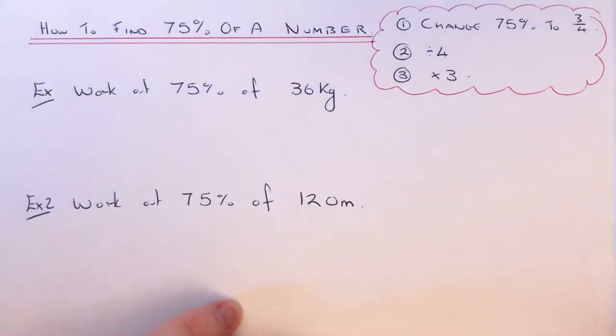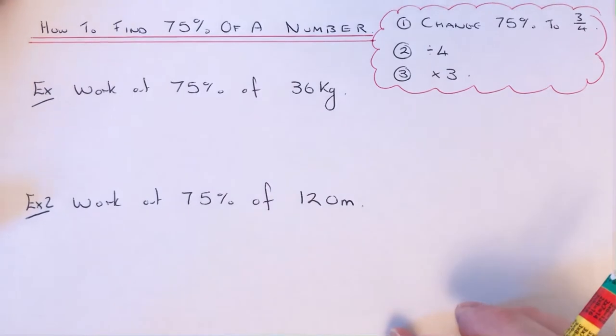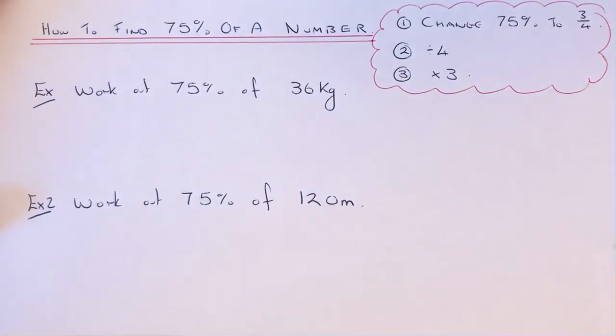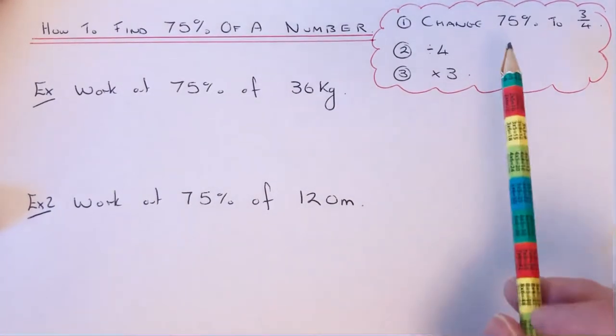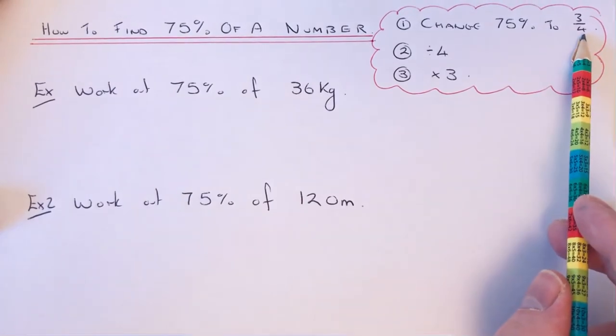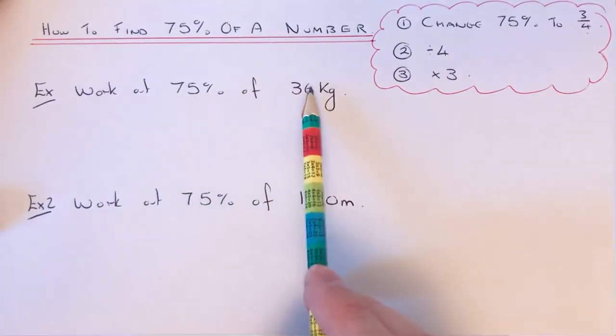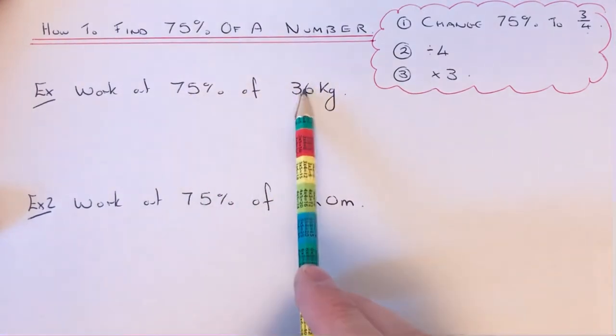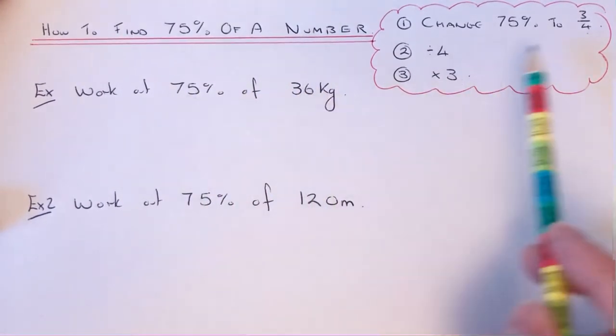Hi guys, welcome back. This is Maths 3000. I'm going to show you today how to work out 75% of a number without using a calculator. You can do this by changing 75% to three quarters. So instead of working out 75% of 36, you work out three quarters of 36.